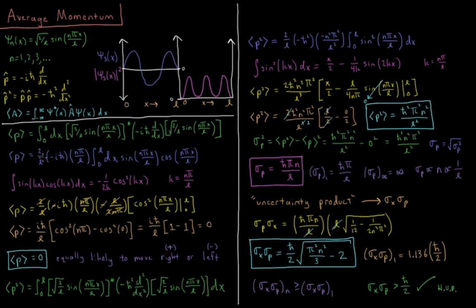We can factor out some things: square root of 2 over l squared gives us 2 over l. Minus i h-bar is a constant, so we pull that out. When we take the derivative with respect to x, sine becomes cosine and we bring out the extra factor nπ/l. Now we have the integral from 0 to l of sine(nπx/l) times cosine(nπx/l). The integral to look up is the integral of sin(kx)cos(kx) dx.